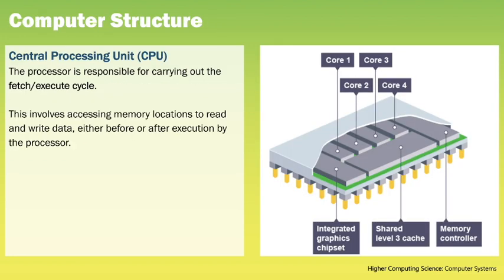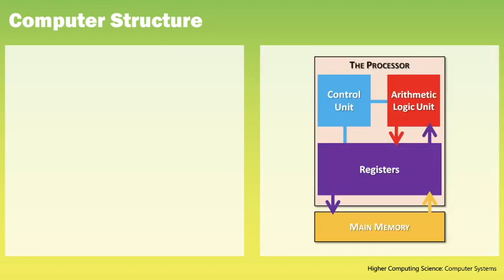Moving on to computer structure. The central processing unit is the brain of the computer and is responsible for carrying out the fetch-execute cycle, which involves accessing memory locations to read and write data before or after execution by the processor. Most modern processors have more than one core, meaning there are multiple cores within the CPU. The more cores present, the greater number of tasks that can be processed simultaneously. Within a processor the main components are the control unit, the arithmetic logic unit, and the registers.